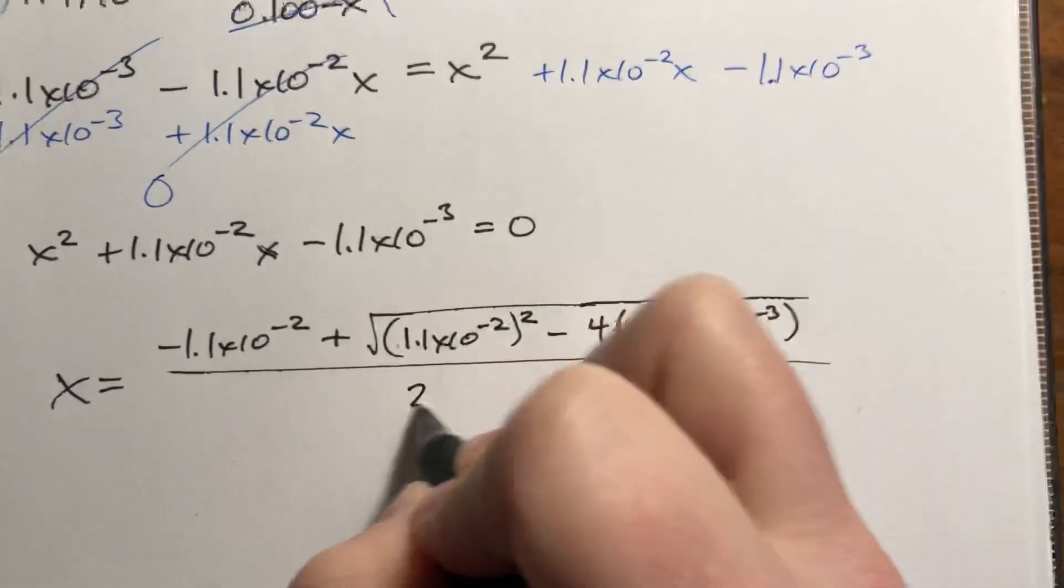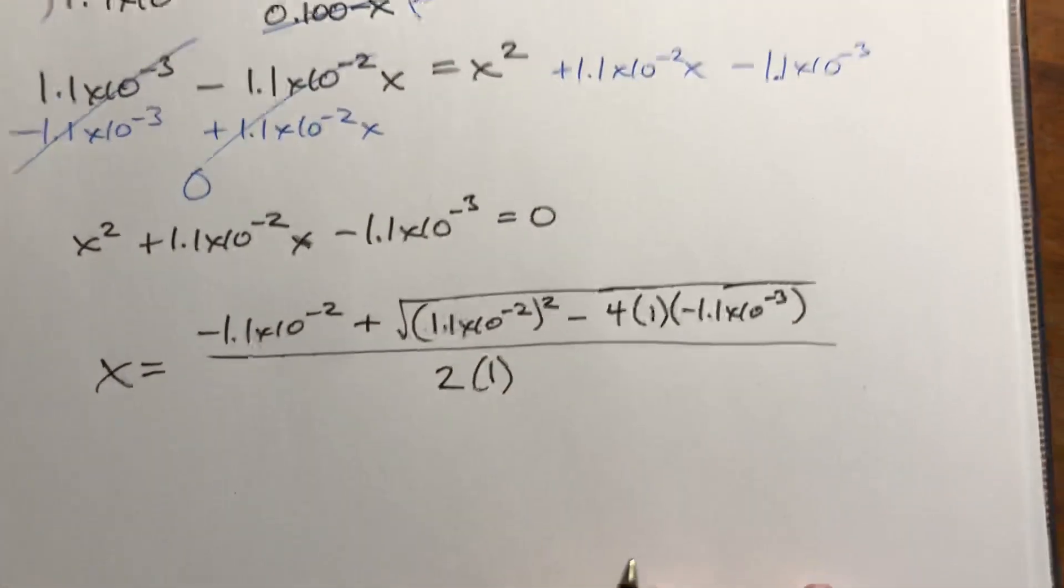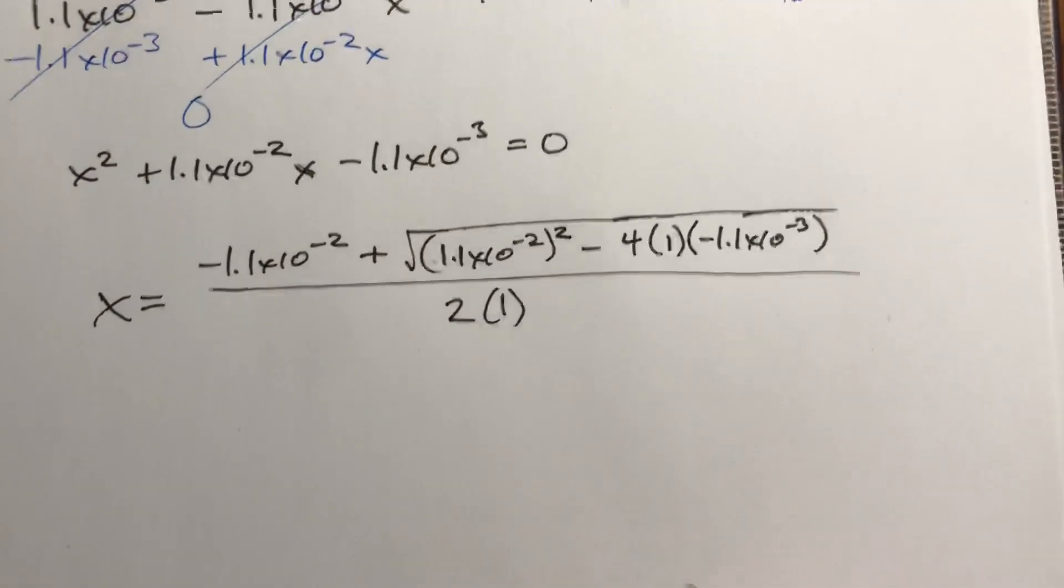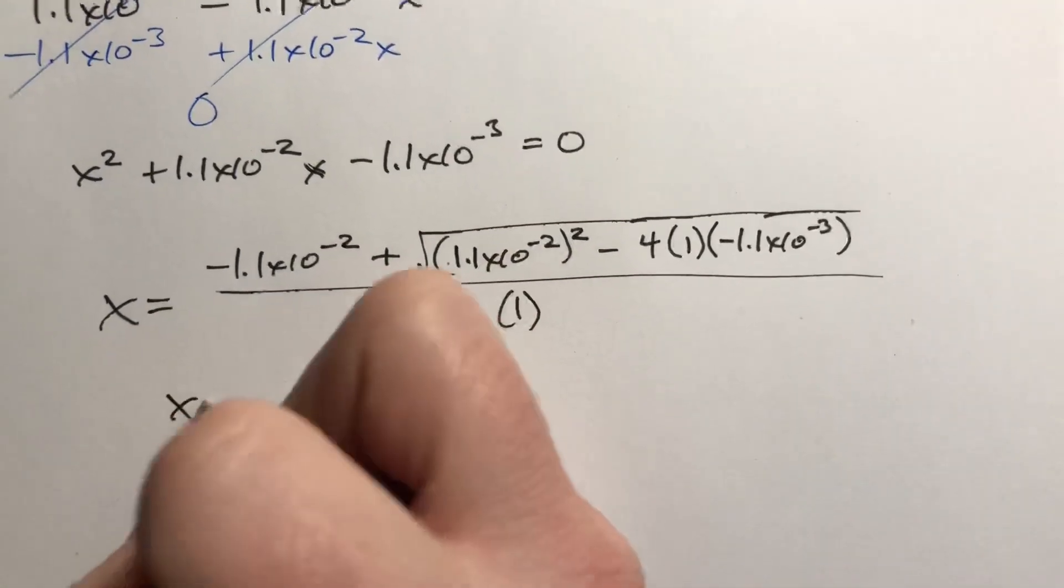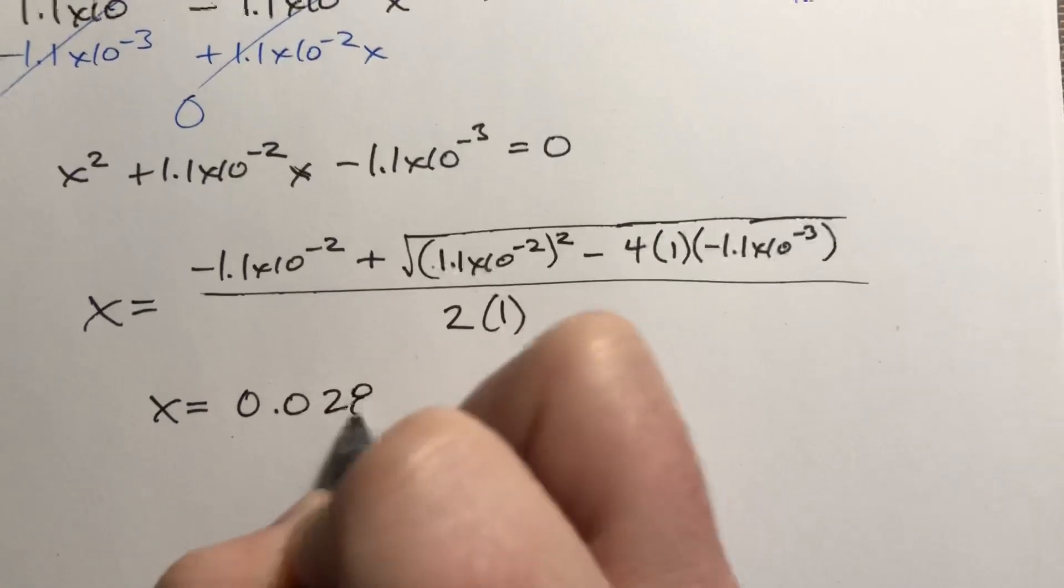All of that divided by 2A, and A is 1. I'm too lazy to type this in my calculator since I have the answer in front of me. x comes out to be 0.028 molar,